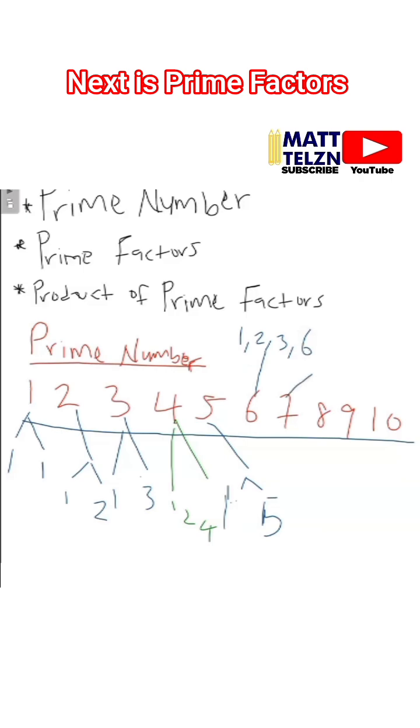Looking at seven, what are the factors of seven that we have here? We have one and seven.